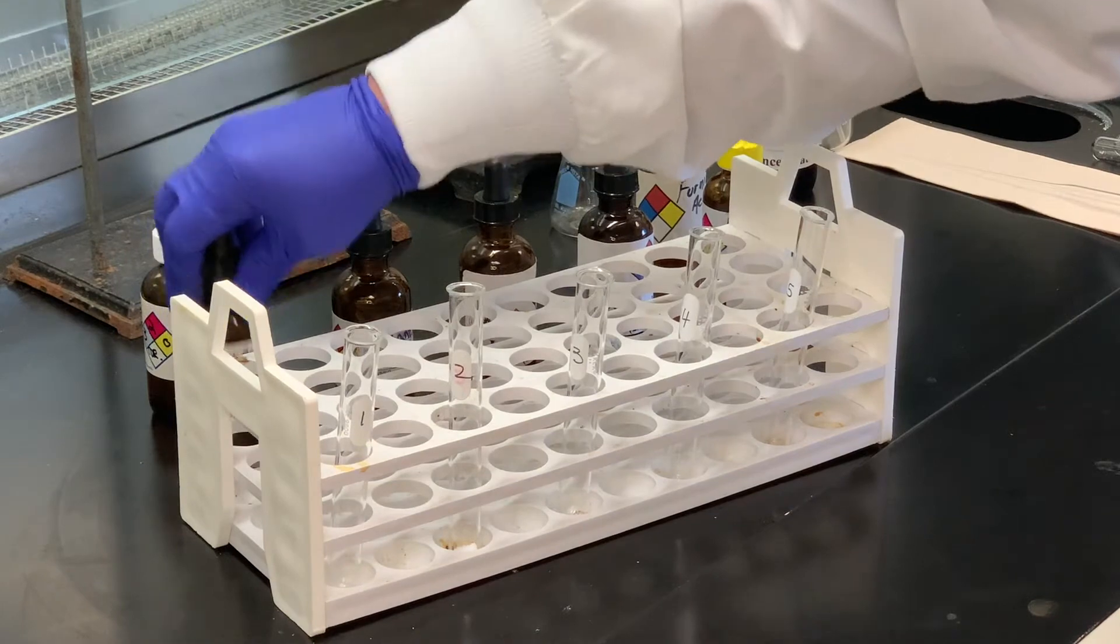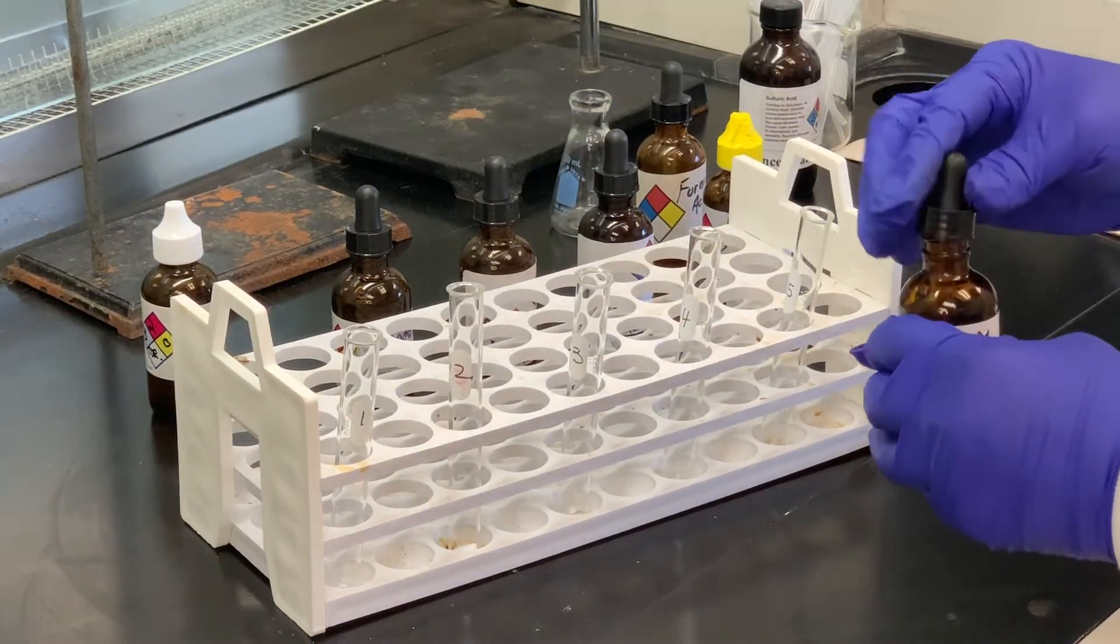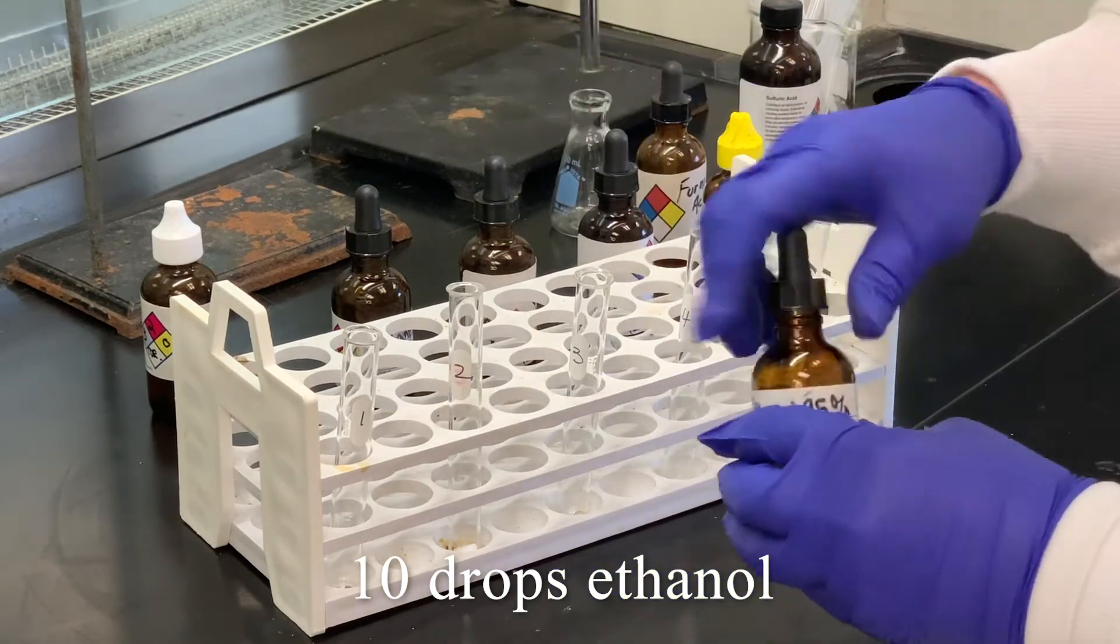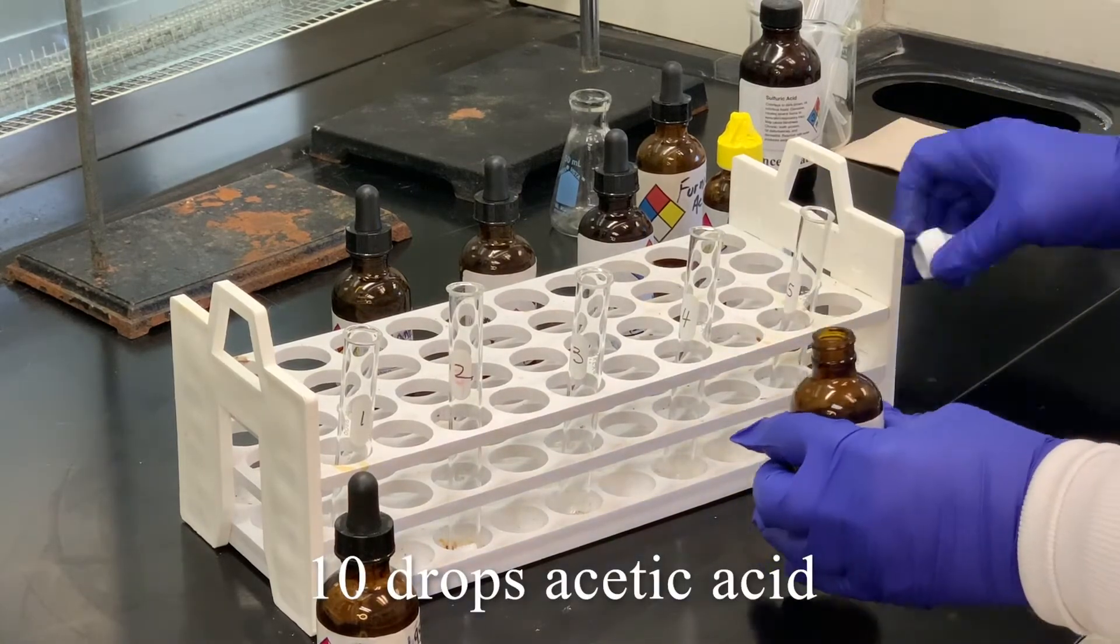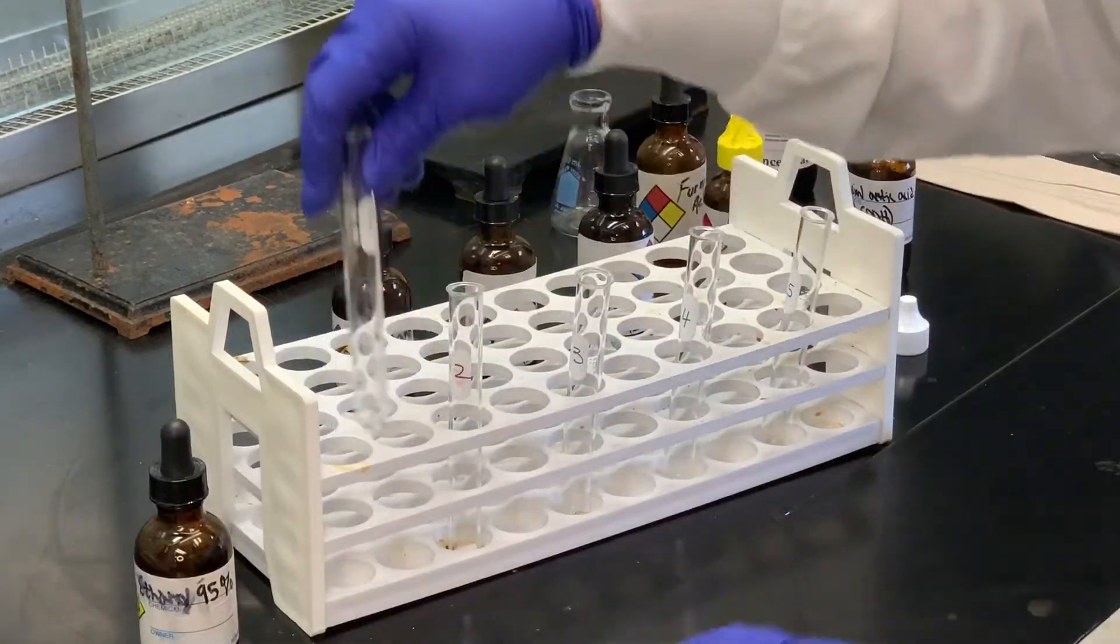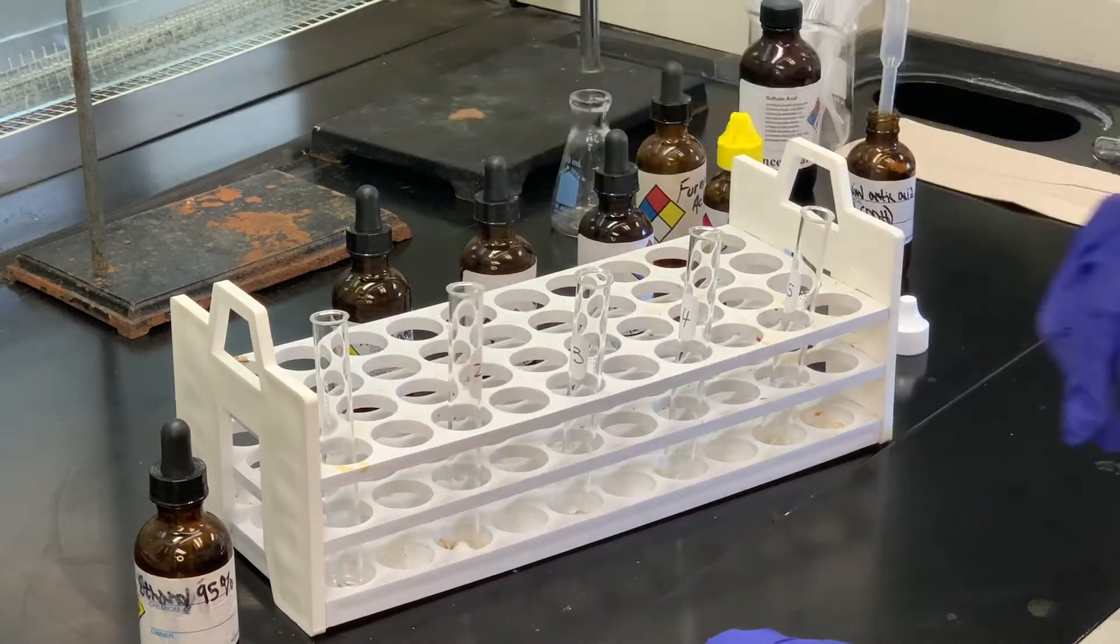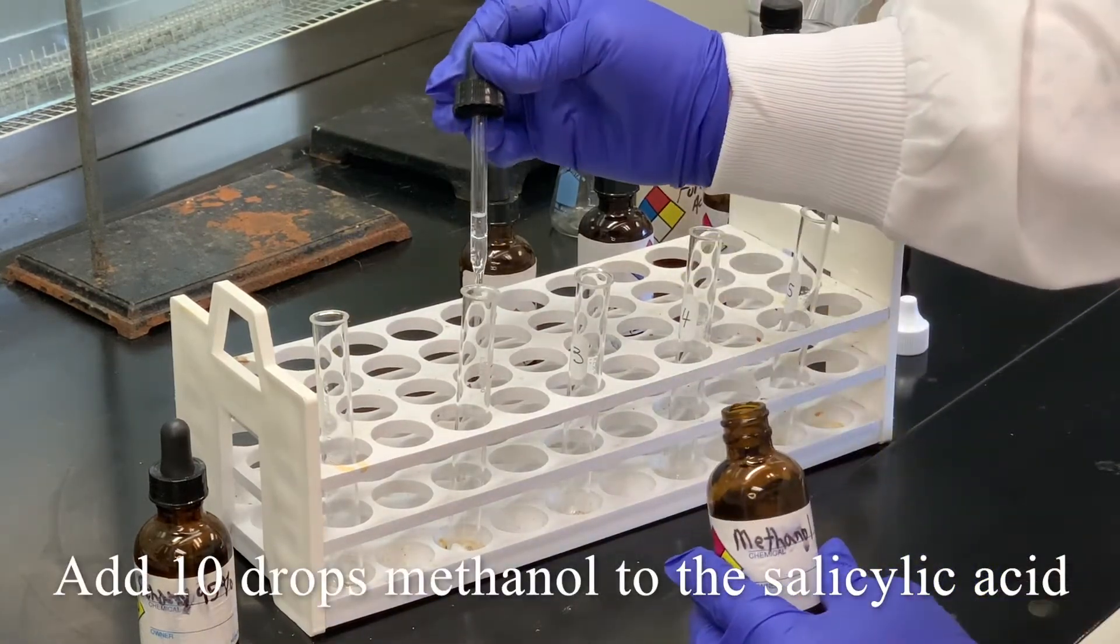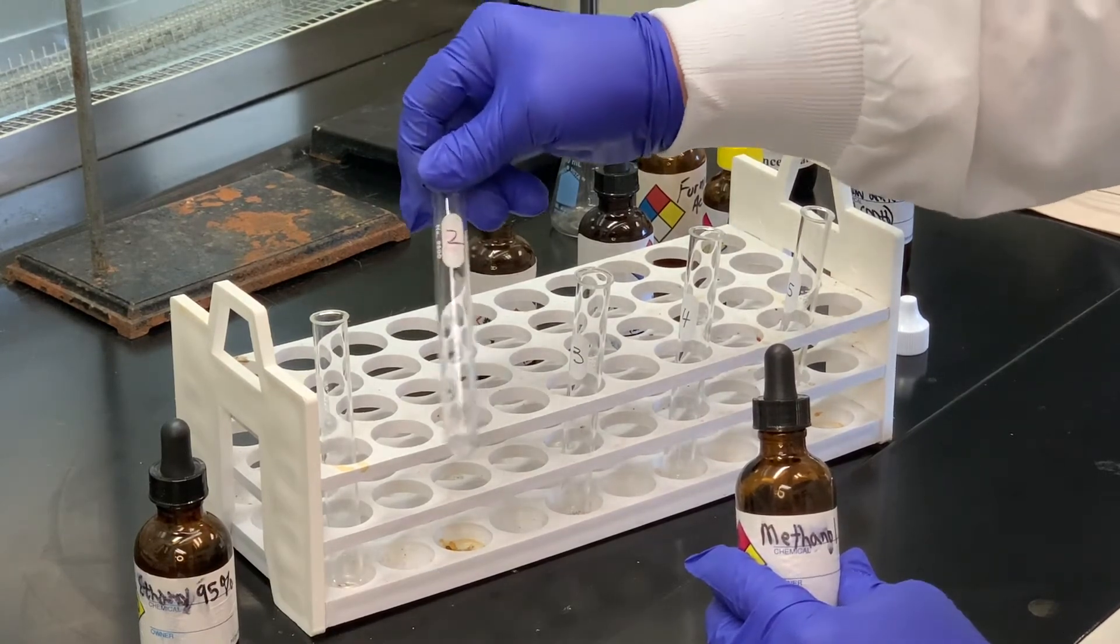In the first test tube, we're going to put ethanol and we're going to use 10 drops of the ethanol. And to that, we're going to add 10 drops of the acetic acid. We'll swirl that to mix. In the second test tube, we've got the salicylic acid. And to that, we're going to add 10 drops of the methanol. And you can tell that solid has dissolved.